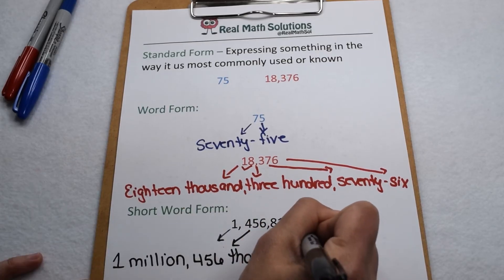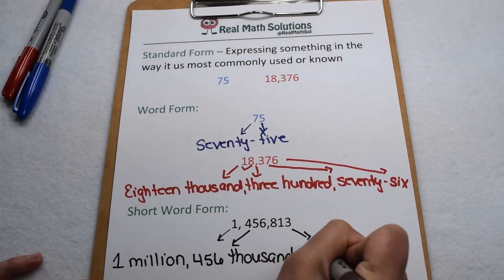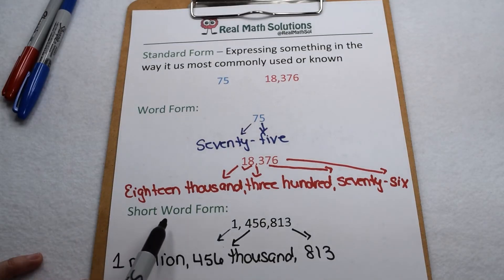And then for 813, we would simply keep that in number form. So in short word form, it would look like 1,456,813.